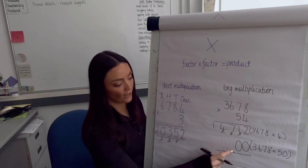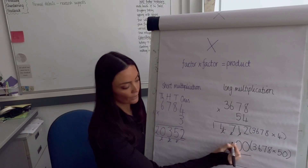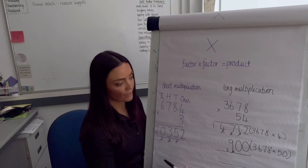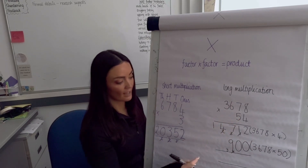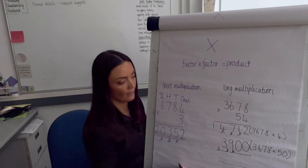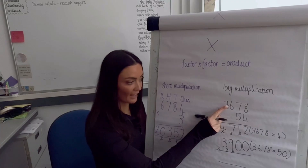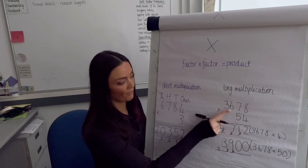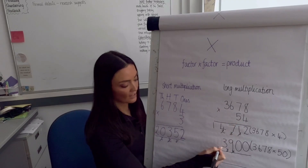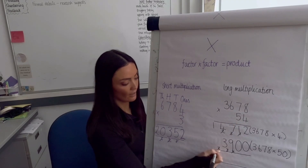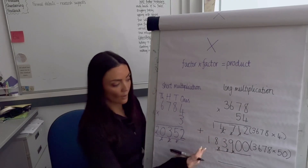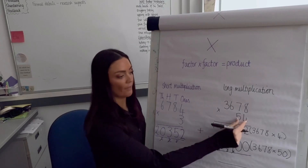5 times 7 = 35, plus the 4 = 39, keeping columns in line. Then 5 times 6 = 30, plus the 3 = 33. Then 50 times 3000, or 5 times 3 = 15, representing 150,000, plus the 3 ten-thousands already exchanged = 18. Now I need to add both answers together because I partitioned the 54.